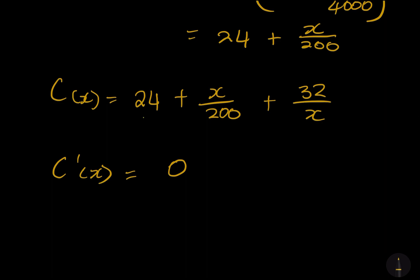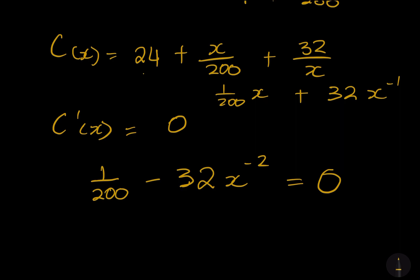What would be the derivative? 24 is a constant, it goes away. We are going to be left with 1 over 200. Remember, this is the same as 1/200 x plus - let me write it this way - that's 32x to the exponent minus 1. This would be 1/200 minus 32x to the exponent minus 2. Remember, we said we are going to make that equal to zero. We took the derivative, made it equal to zero.